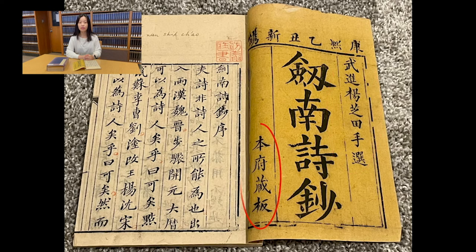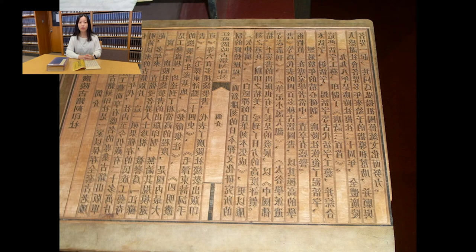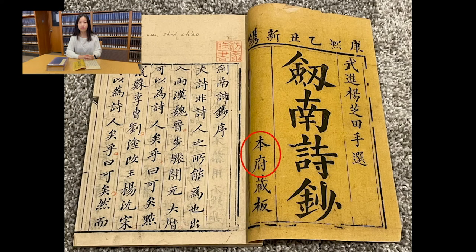On the left side of the inner cover, we could see the characters Benfu Canban. Canban refers to the collection of woodblock sets used to print the book. In ancient times, most books were published using woodblock printing — the publisher would prepare a set of blocks with the whole text for publishing. We could see a sample of the blocks on the screen. The meaning of Benfu can be regarded as an official publication, so Benfu Canban means official edition.